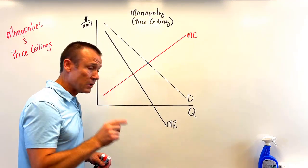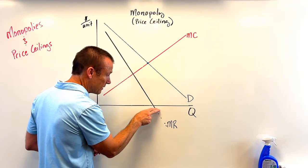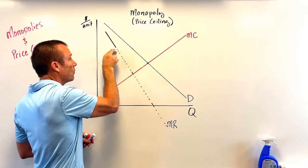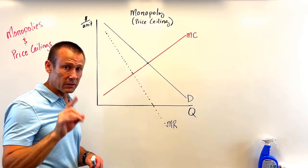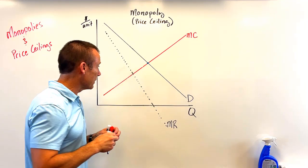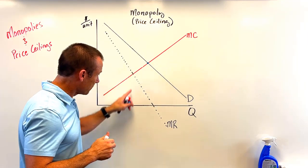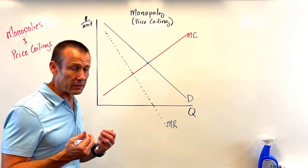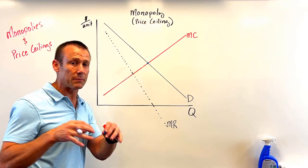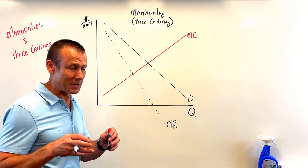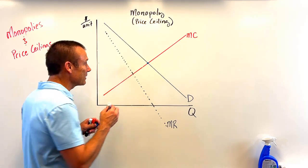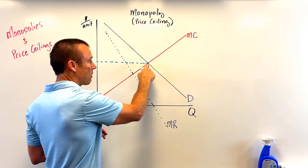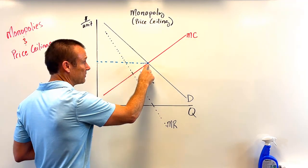That is really important. I'm going to leave a little remnant of the old MR curve — it's no longer going to be the MR once I bring in the price ceiling, but I want to keep a reference point for that original output level when there is no regulation. On an AP test, they would generally put the price ceiling where the demand and the MC curve intersect. With that price ceiling, we're going to actually increase output and eliminate all dead weight loss.